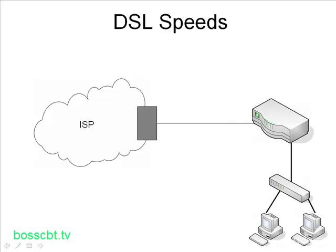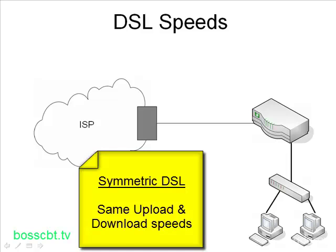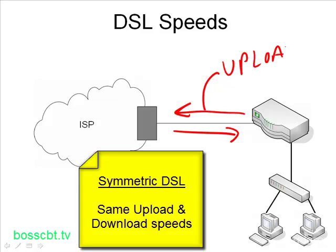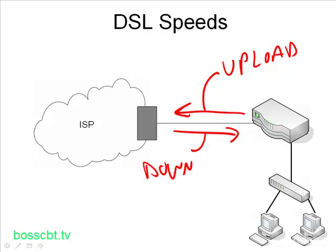Let's talk about DSL and speed. There are two categories when we talk about DSL speed, though keep in mind there are many different service providers offering different packages, so you'll have to shop around. The first category is called symmetric DSL, or SDSL. With symmetric DSL, the speed of your circuit in both directions is the same. The speed going up — called your upload — and the speed going down — called your download — are equal.